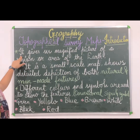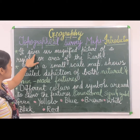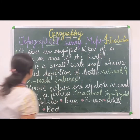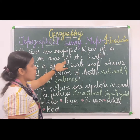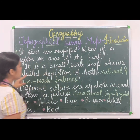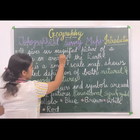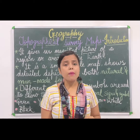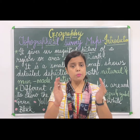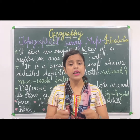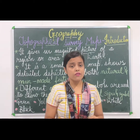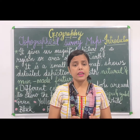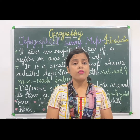The first point, as I have written, is that it gives us a magnified picture of a region or area of the earth. The main word here is 'magnified picture.' What is the work of a magnifying glass? To see the object in bigger size, to make it more clear. So in the same way, a topographical survey map shows us the detail of any area in a more perfect way.